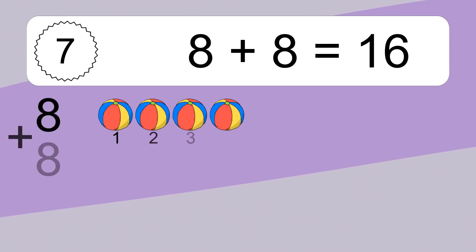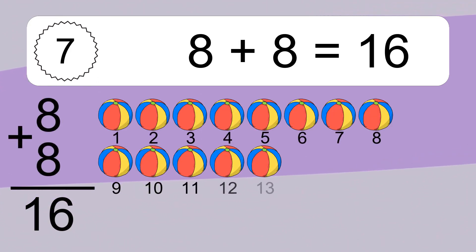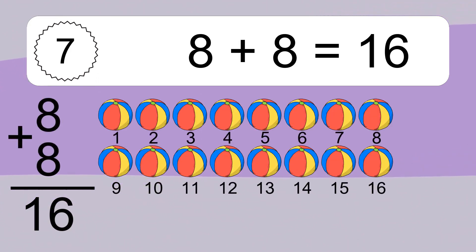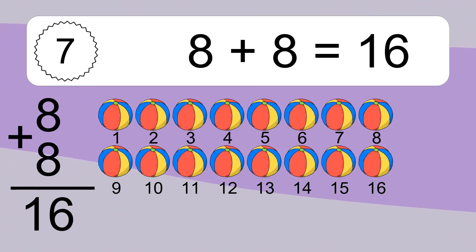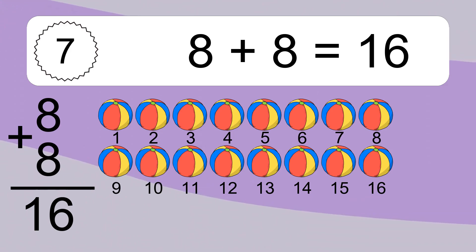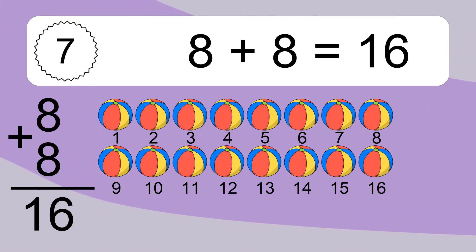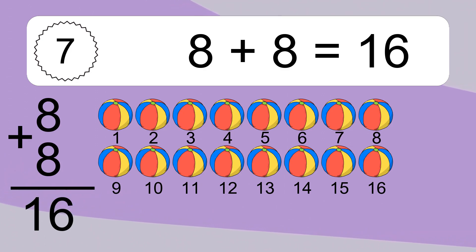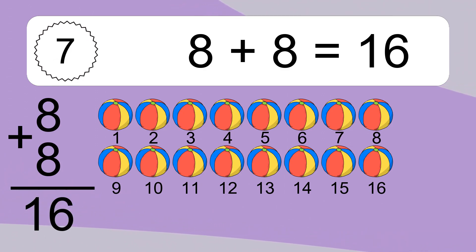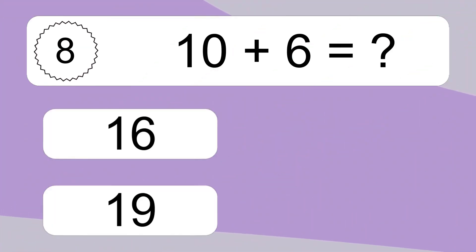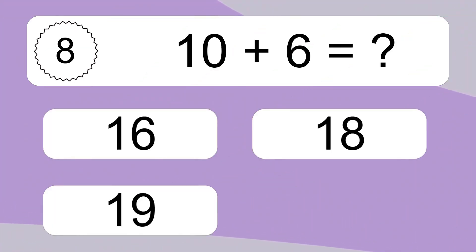8 plus 8 equals what? 8 plus 8 equals 16. Let's count it: 1, 2, 3, 4, 5, 6, 7, 8, 9, 10, 11, 12, 13, 14, 15, 16.